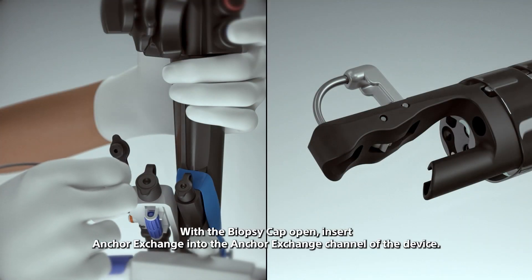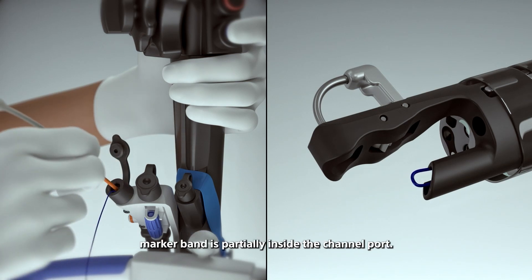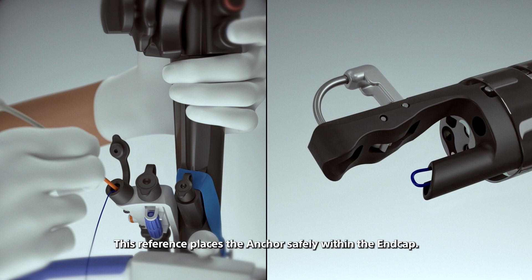With the biopsy cap open, insert anchor exchange into the anchor exchange channel of the device. Advance anchor exchange catheter until the orange marker band is partially inside the channel port. This reference places the anchor safely within the end cap.